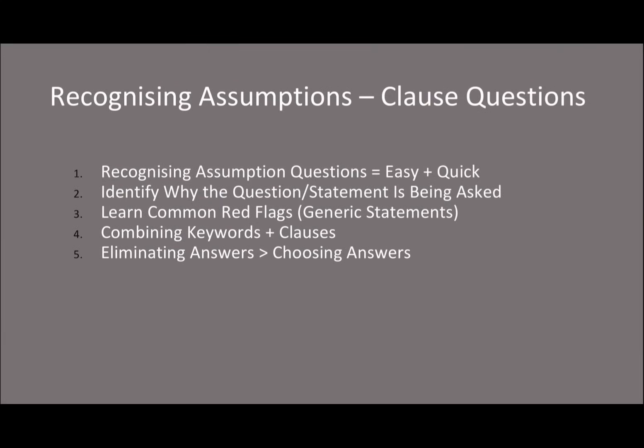Recognising assumption questions are easy to do if you know what to do and what to look out for, and they're quick as well. In decision making, you have 37 minutes for 35 questions, which leaves you at around one minute two seconds on average per question. Recognising assumption questions you can definitely do a lot faster, so by clawing time from recognising assumptions, you can divert it towards the more important two-mark questions. That's why it's really important to understand how to do these properly.